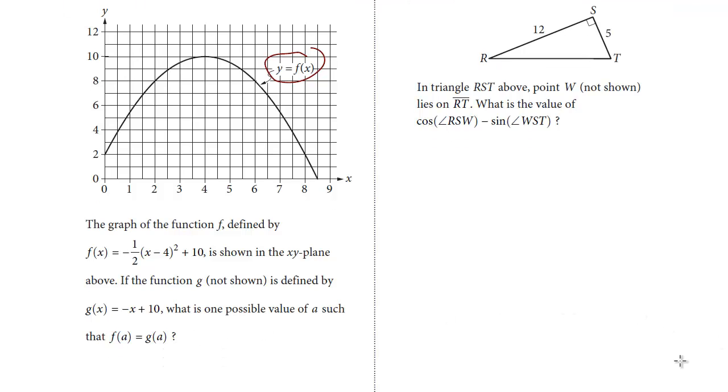The function we have is a parabola, and we have the equation here. We see that it opens downward. There's another function that's defined, negative x plus 10, and that's a linear equation, and we want to find when these equal. So we're looking for the solutions when the line meets the parabola.